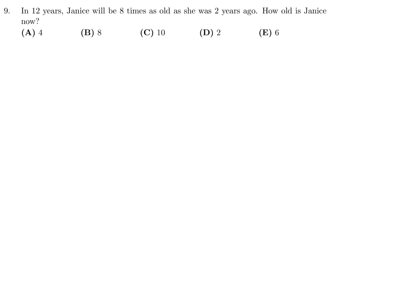In 12 years, Janice will be 8 times as old as she was 2 years ago. How old is Janice now? So, if her age is x, 12 years from now it'll be x + 12. And that is the same as 8 times her age 2 years ago, 8(x - 2). So x + 12 = 8x - 16. That means 12 + 16 is 28, and that's 7x. x = 4. She's 4 years old. Number 9, the answer is A.